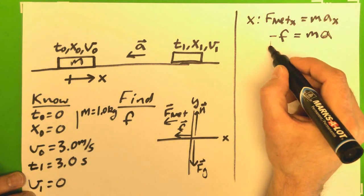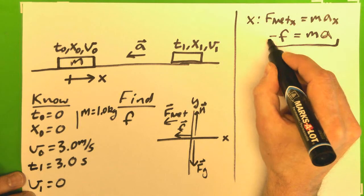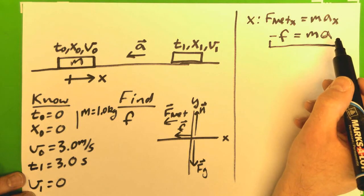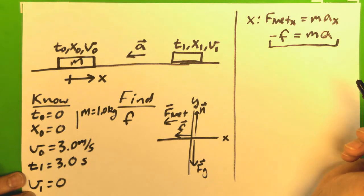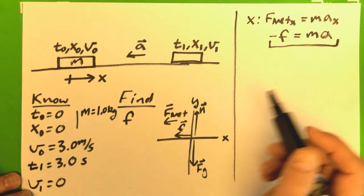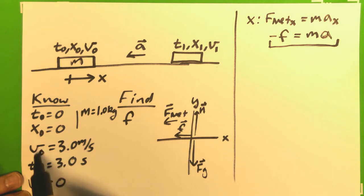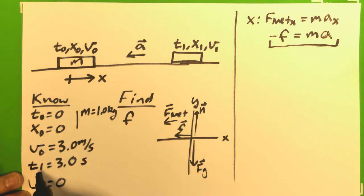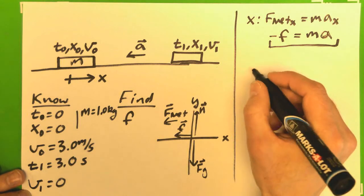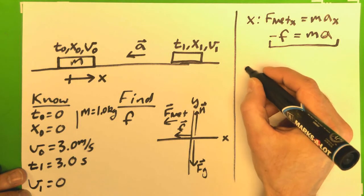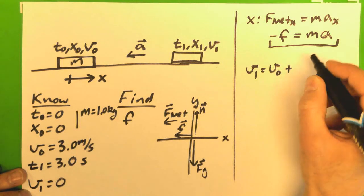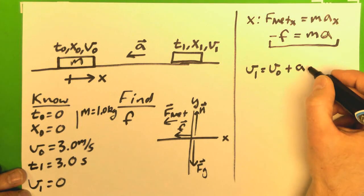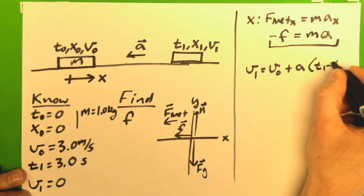So, now I've got a pause. I have f related to a, and I'm going to now have to find a through our standard means through kinematics. So, looking at this, I know a lot about the velocities, a lot about the time, and so that makes me want to now use my kinematic equation, the definition of the acceleration: v1 equals v0 plus a times the time period, which is t1 minus t0.